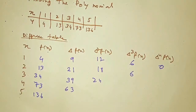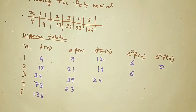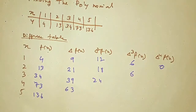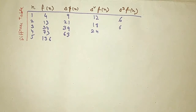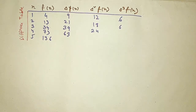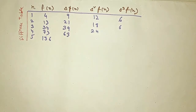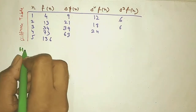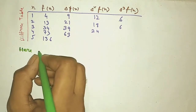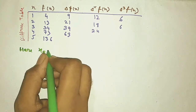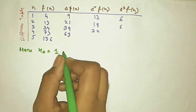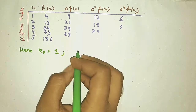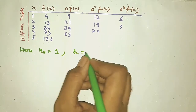The differences come out to six, six, and zero. So this is the finite difference table for this problem. Now we are going to find the polynomial.